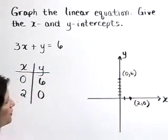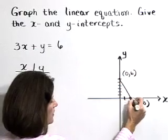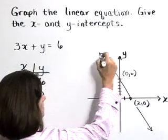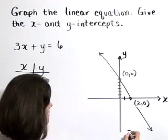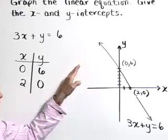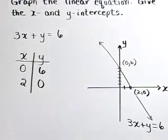The y-intercept, then, is 0, 6. Let's connect these points with a straight line and extend it. Let's identify that line with its name, which is 3x plus y is equal to 6. So we've graphed that line. We've identified the intercepts.